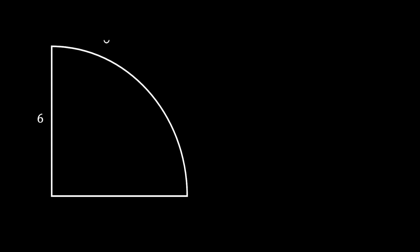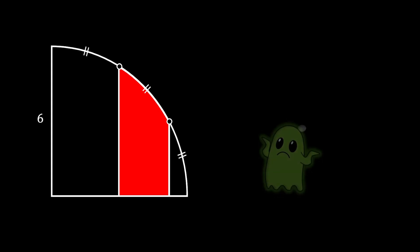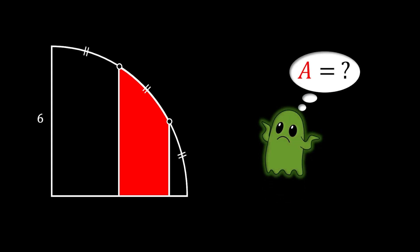Let's say that we have a quarter circle with radius 6, and then we will insert two points on the arc of the quarter circle that are dividing the arc into three identical pieces. Now if we pull the line from those points horizontally down, you can see that we have this red shaded area. The question is: is it possible for us to calculate the value of this red shaded area?